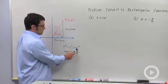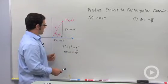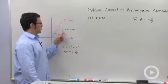We have x squared plus y squared equals r squared, tangent theta equals y over x, x equals r cosine theta, and y equals r sine theta.